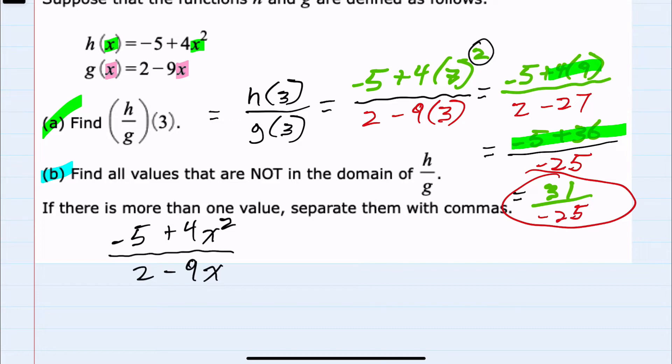However, in the denominator, we know that our denominator cannot equal 0. So we have to exclude any x values that would give us a 0 denominator.